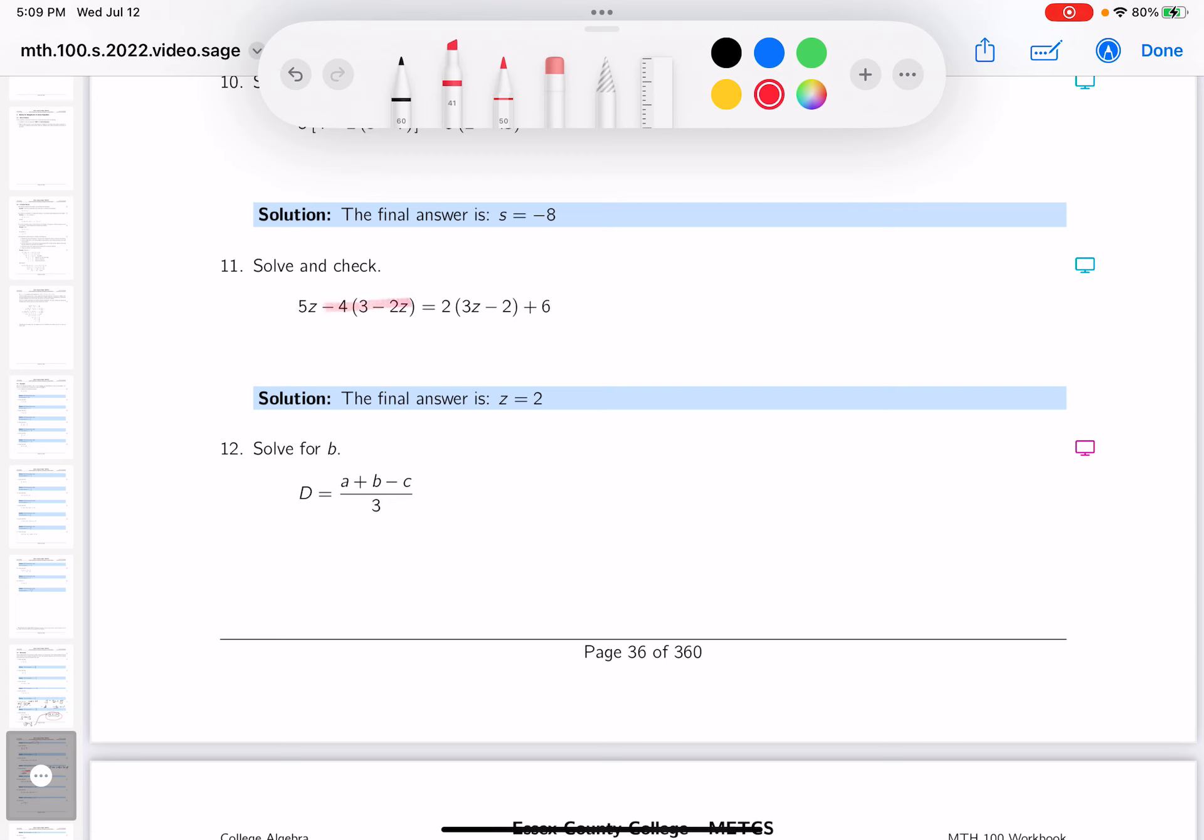I'm going to get rid of this grouping symbol and that one. Let's go for it. What do you get? 5z minus 4 times 3 is minus 12, and minus 4 times minus 2 is plus 8, plus 8z. On the other side, you get 2 times 3 is 6z, and 2 times minus 2 is minus 4, plus 6.